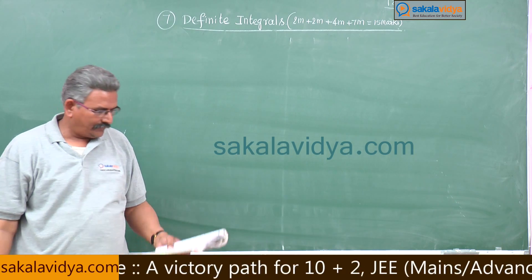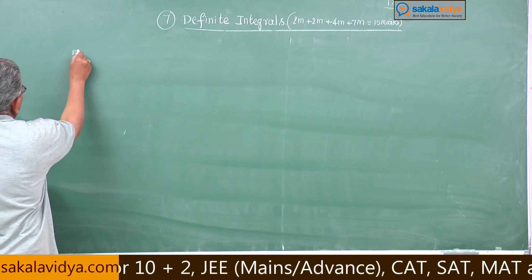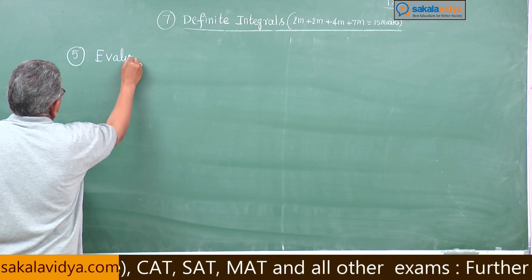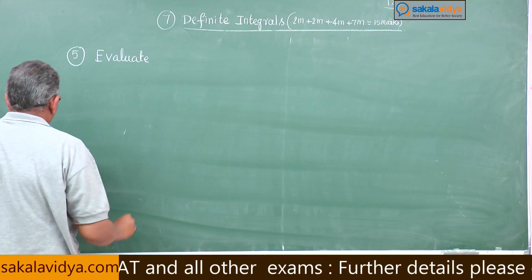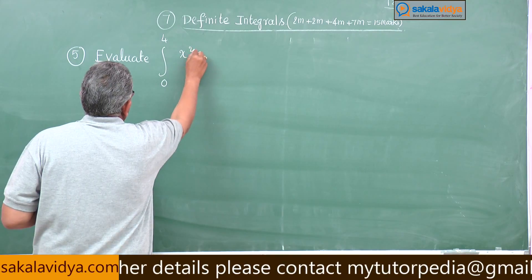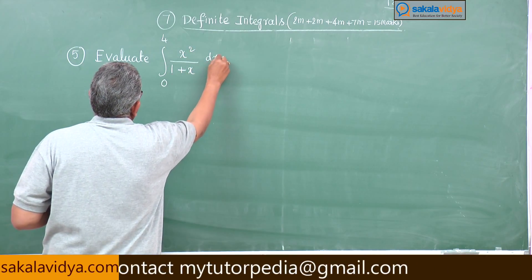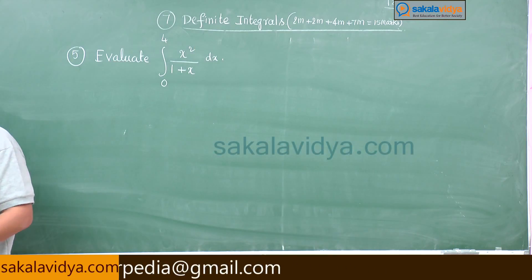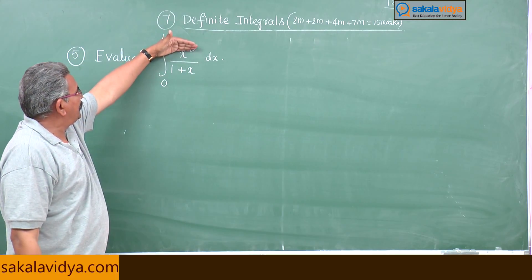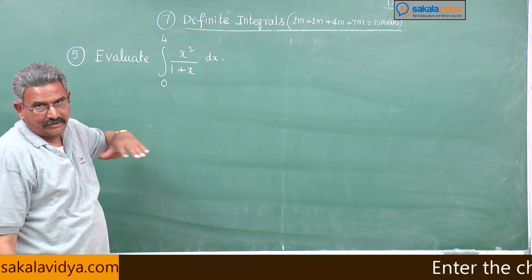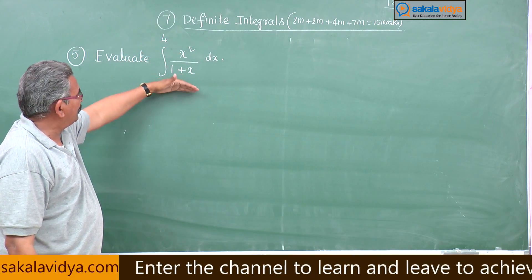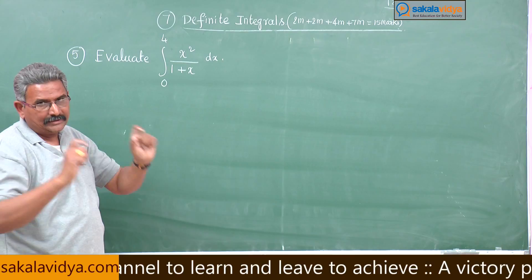Fifth problem. Evaluate integral 0 to 4 of x squared by (1 plus x) dx. If you observe this problem, the numerator degree is greater than the degree of the denominator — that is why this is known as an improper fraction. We have to divide x squared by (1 plus x), then integrate and apply the limits to get the definite integral value.